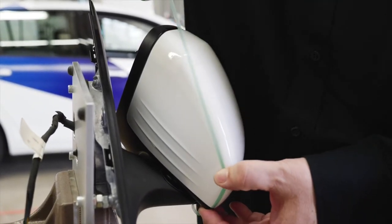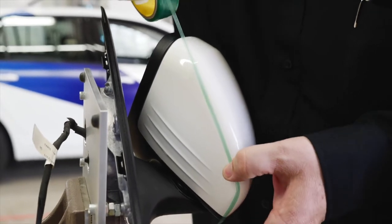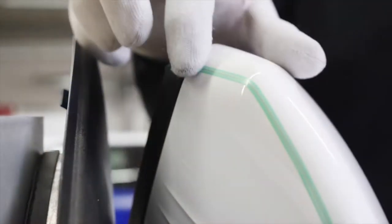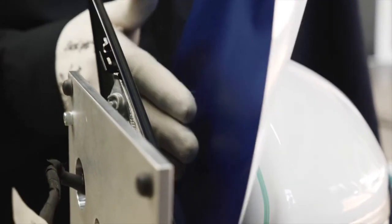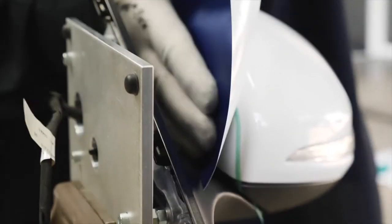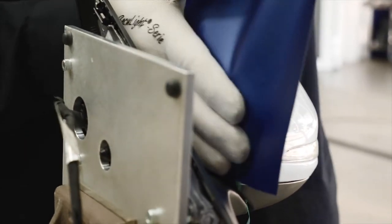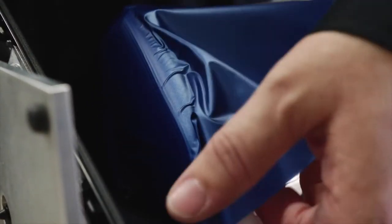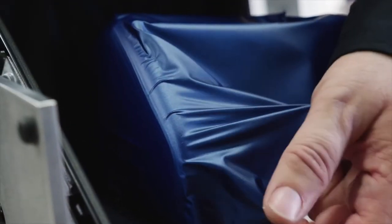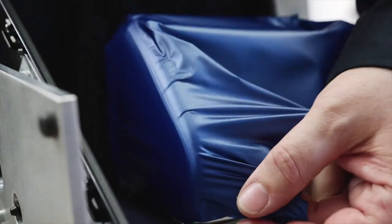Secure the knifeless tape to ensure good adhesion to the substrate. Take a pre-cut film and apply it to the undercut. Make sure that the film is applied without tension and that the knifeless tape is completely covered. If required, use heat to conform the film around the shaped edge and press the film onto the knifeless tape.